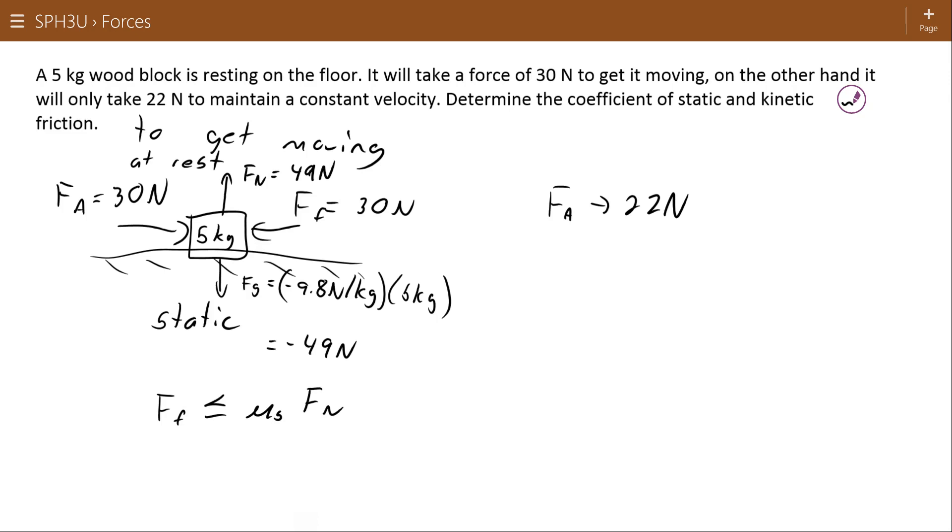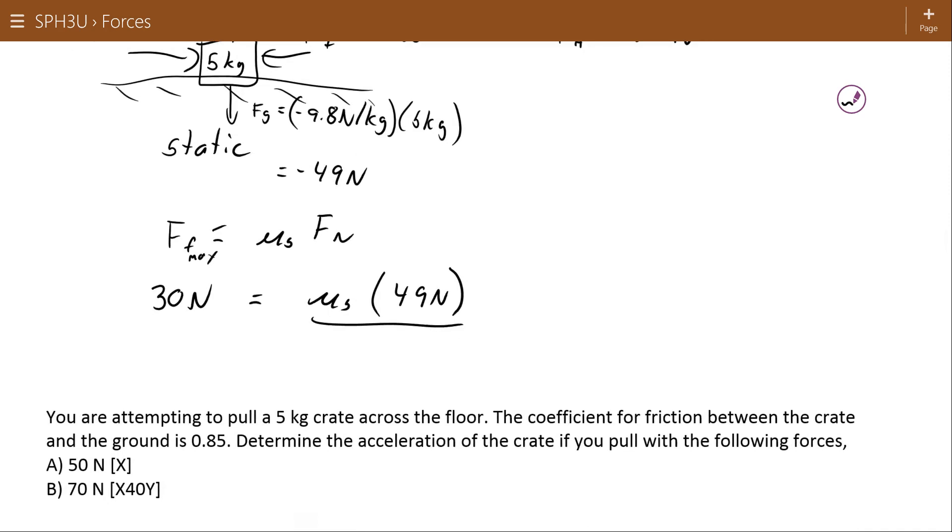We can use our equation for static friction, which would usually say less than or equal to here, μsFn. But what we're going to do this time, since we're dealing with the critical point where it goes from being resisted to getting going, is we're going to assume that the force of friction is already at the max, so we're going to use the equal sign. That means my force of friction is 30 newtons, my coefficient of static friction is what I'm finding, and my normal force is 49 newtons. Dividing both sides by 49, I get a coefficient of static friction of 0.612.